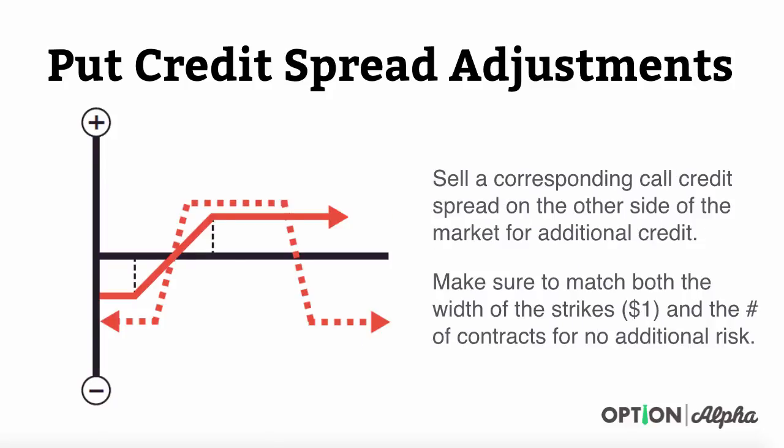Here's exactly what we would do: we would take that original put credit spread and we would sell a corresponding call credit spread on the other side of the market for additional credit.